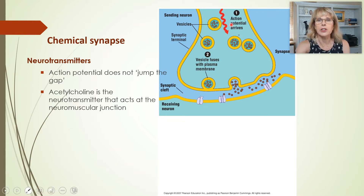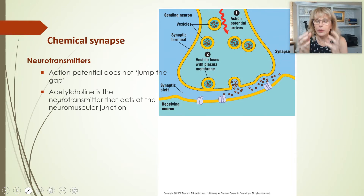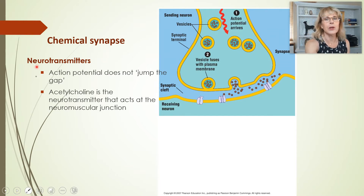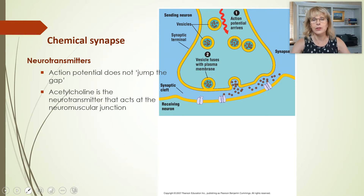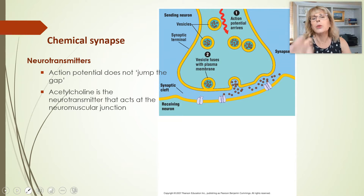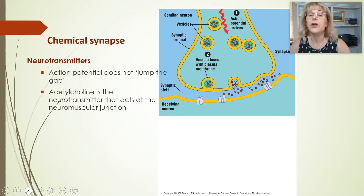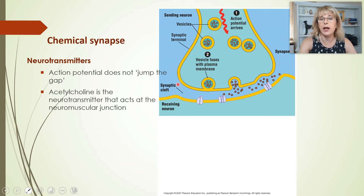We were talking about how when an action potential arrives at the axon terminus — this is the synaptic bulb — it will cause these little packages of neurotransmitter molecules to be exocytosed, spit out into the synapse. They can't go floating away; they're trapped in a space called the synaptic cleft. The more frequently an action potential arrives, the more neurotransmitters build up in this space.